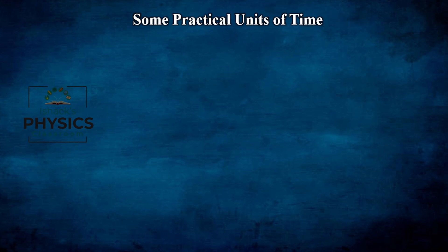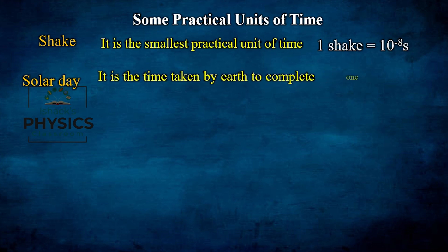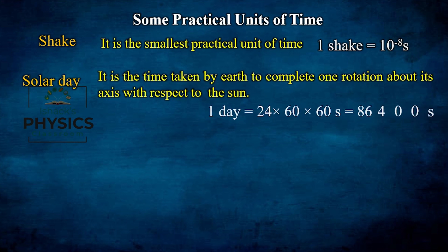Now for practical units of time. First is the shake, which is the smallest unit of time: 1 shake equals 10⁻⁸ seconds. Next is the solar day, which is the time taken by Earth to complete one rotation about its axis with respect to the Sun. One solar day equals 24 hours, which is 24 × 60 × 60 = 86,400 seconds.